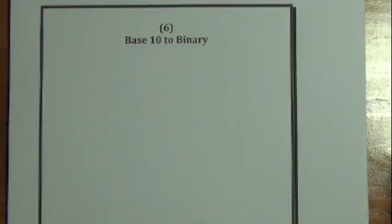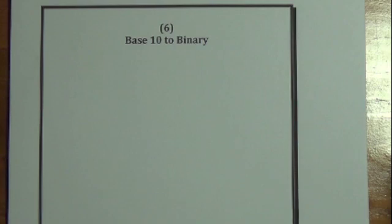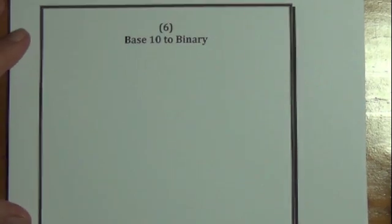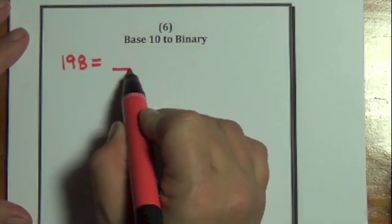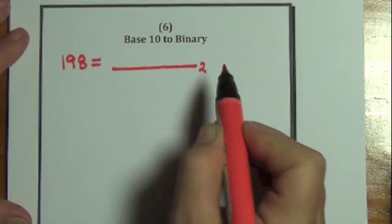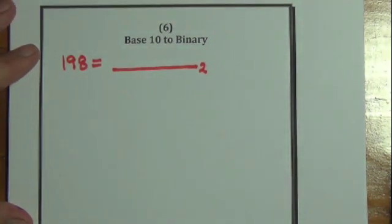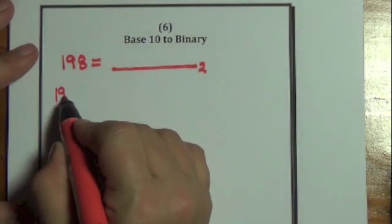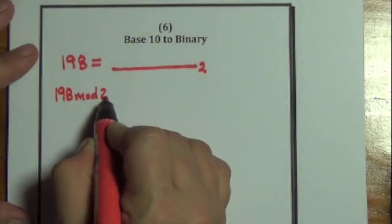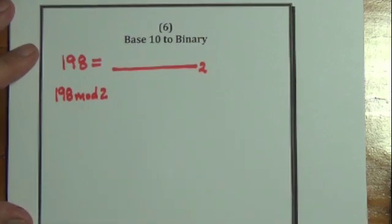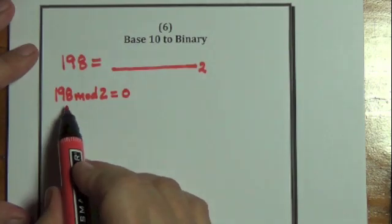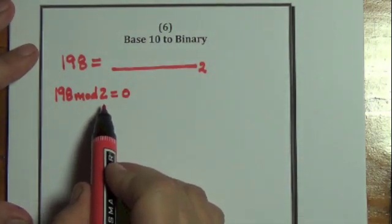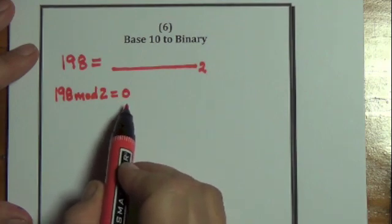We are ready to illustrate the conversion from base 10 to binary, base 2. I will use the number 198. I'm going to be converting the 198 base 10 to its base 2 form using the modular operator. So I begin by writing 198 mod 2. 198 mod 2 is equal to 0 because when I take 198 and divide it by 2, I get 99 with a remainder of 0.